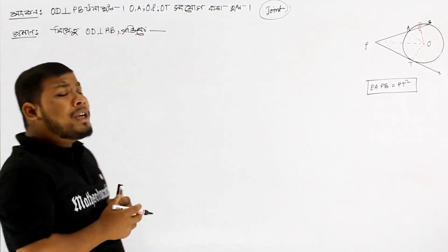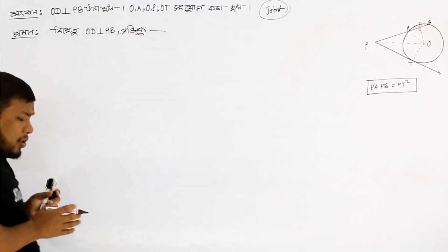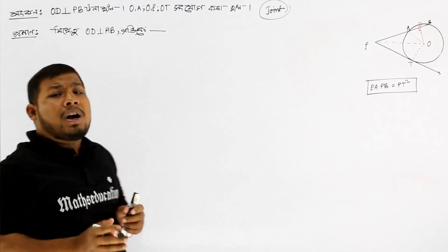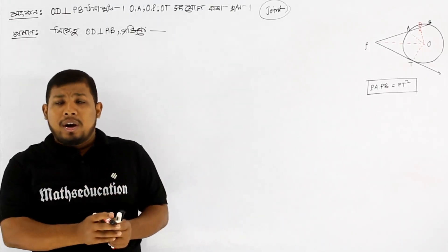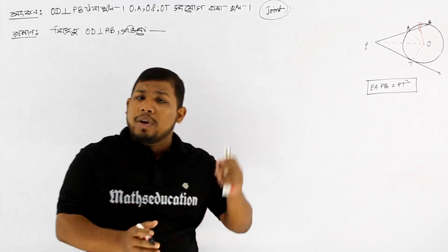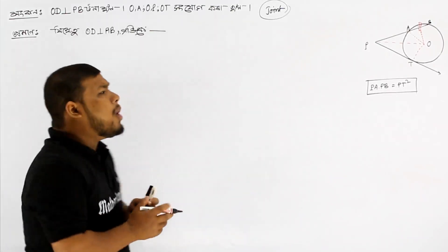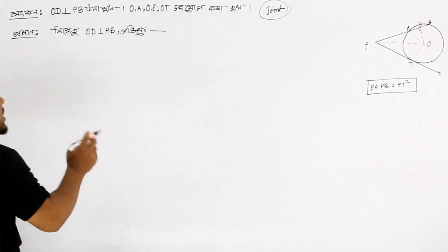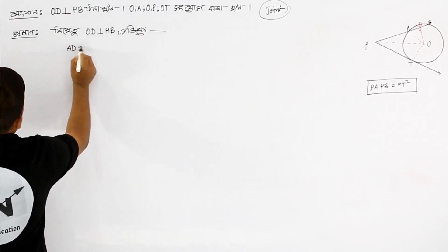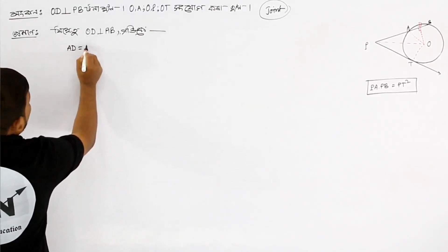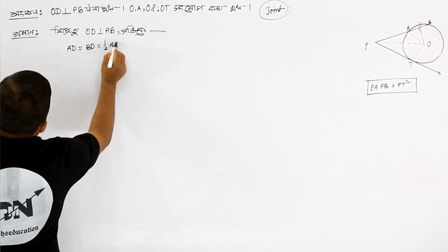The perpendicular drawn from the center to a chord bisects the chord. Since D is the foot of perpendicular from the center, we can say: A D equal to B D equal to half of A B.